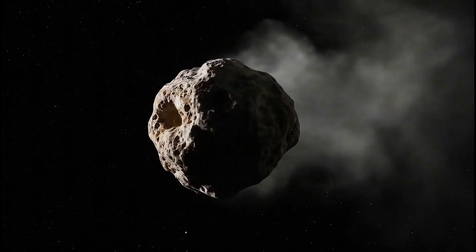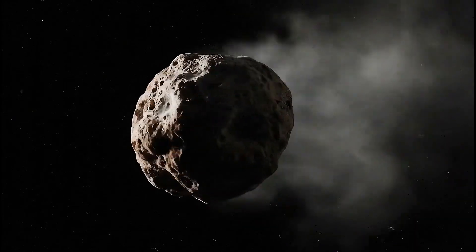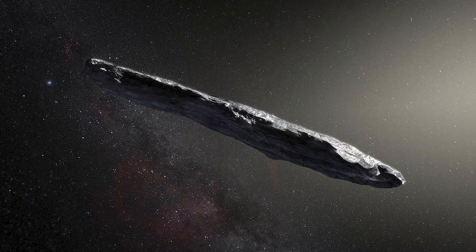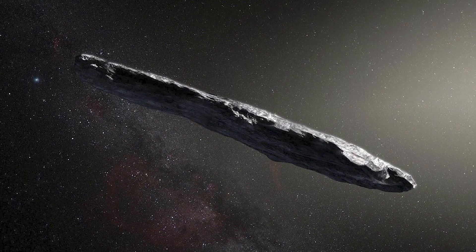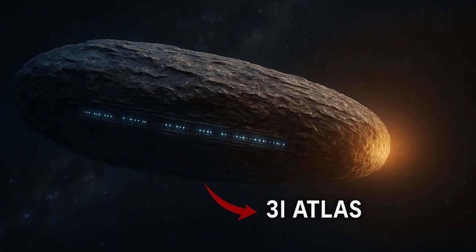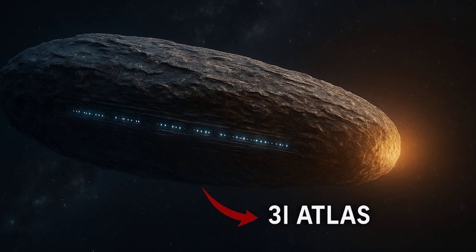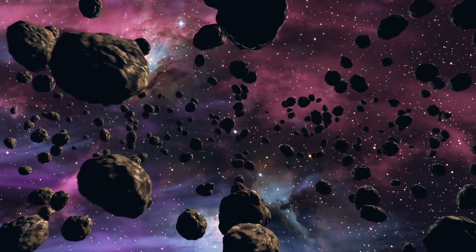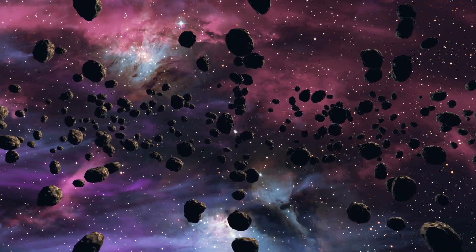There is also humility here. Oumuamua startled us with its odd shape and non-gravitational acceleration. Borisov looked like a classic comet and proved that other systems make familiar ice. 3I Atlas sits between these lessons. It behaves mostly like a comet, yet it is bold in chemistry and early activity. That is the point.